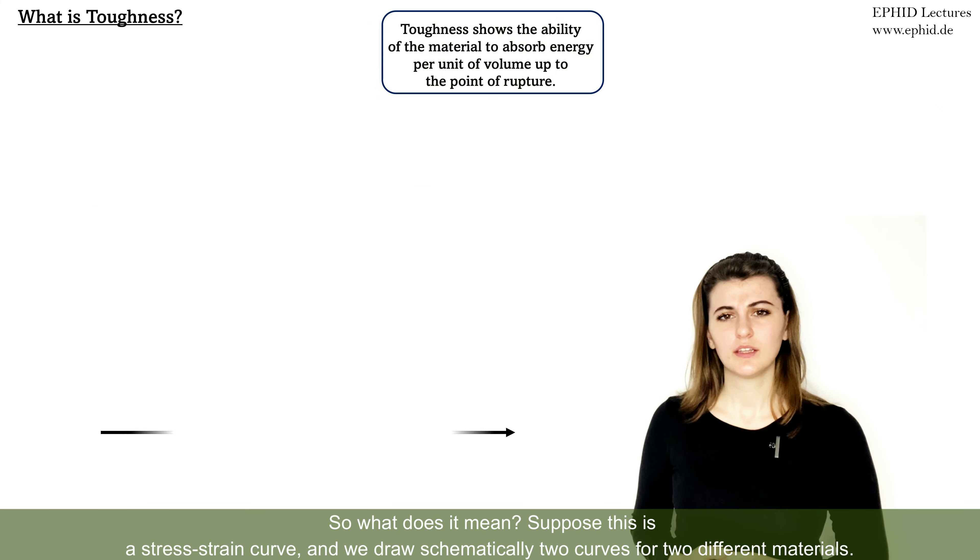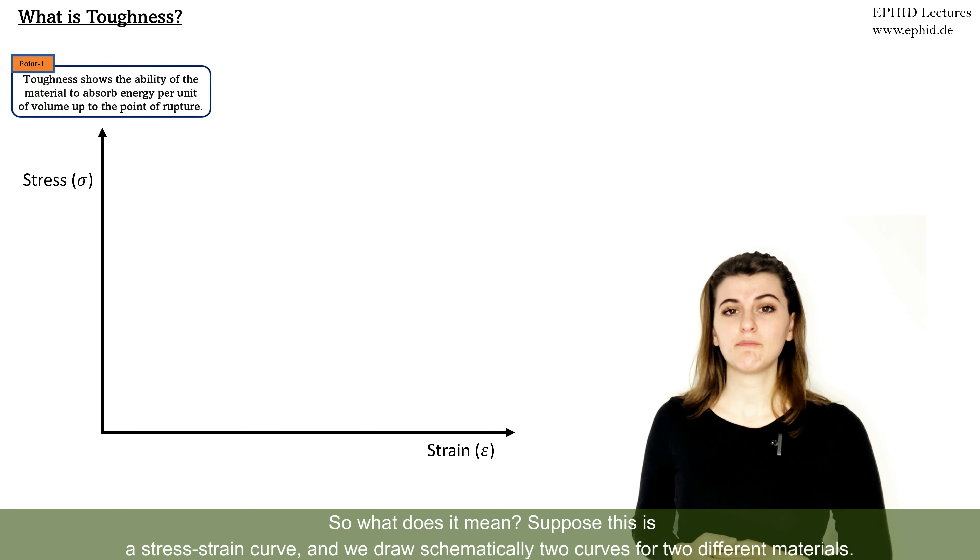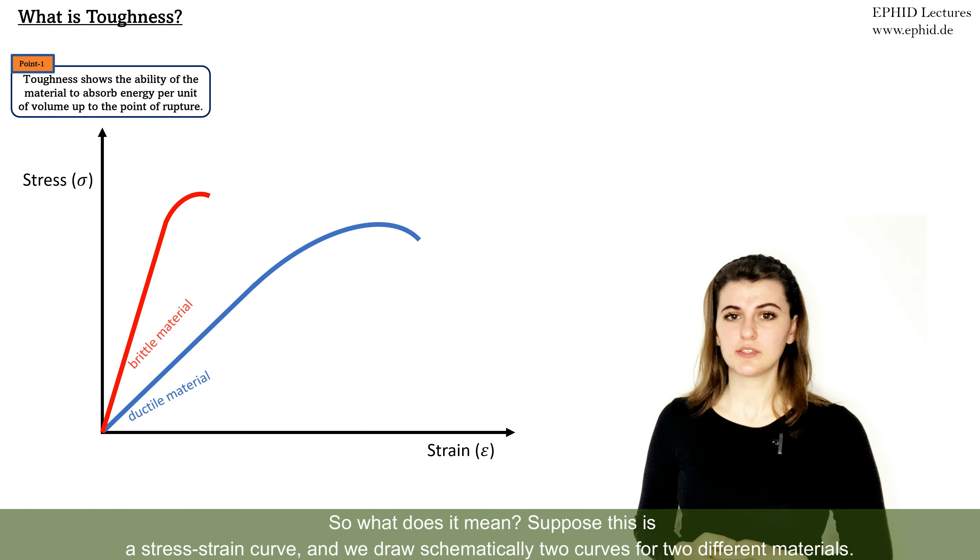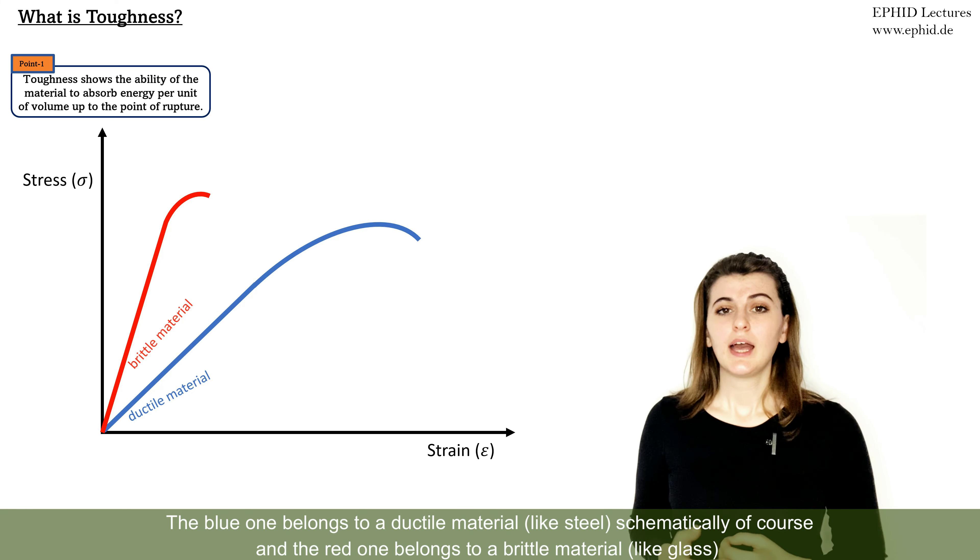So what does it mean? Suppose this is a stress-strain curve and we draw schematically two curves for two different materials. The blue one belongs to a ductile material, like steel, schematically of course, and the red one belongs to a brittle material, like glass.